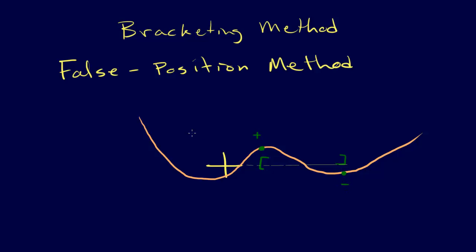So then the next thing we do is we draw a straight line between these points. This is also called the linear interpolation method, so we draw a straight line between those two points, and we can easily find the point at which that intersects with the axis here.